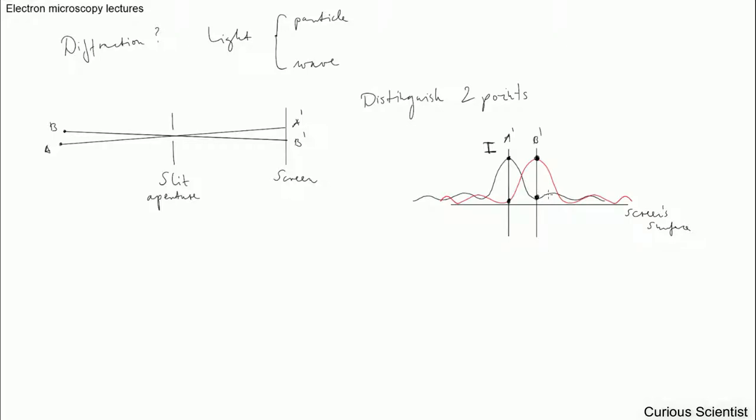But if they are any closer to each other, if the maximum is towards this or the other way around, the minimum is going in this direction, then we cannot distinguish the two objects because the overlap of the two diffractions will make it impossible.